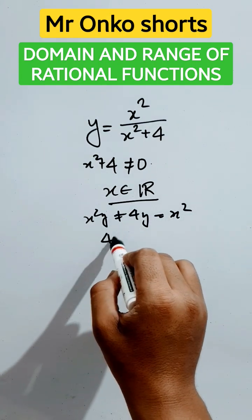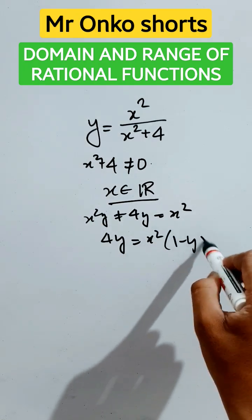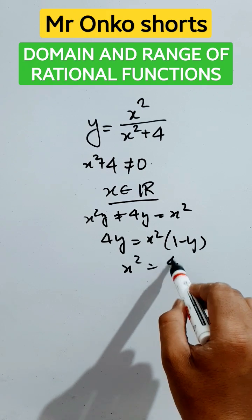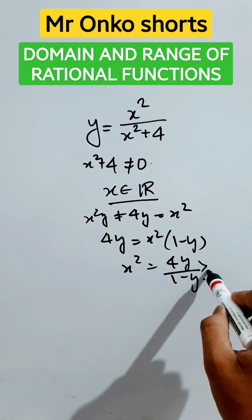In this way, now bring this part here and take x squared common. It will be 1 minus y, so x squared equals 4y divided by 1 minus y. So this square is obviously greater than or equal to 0.